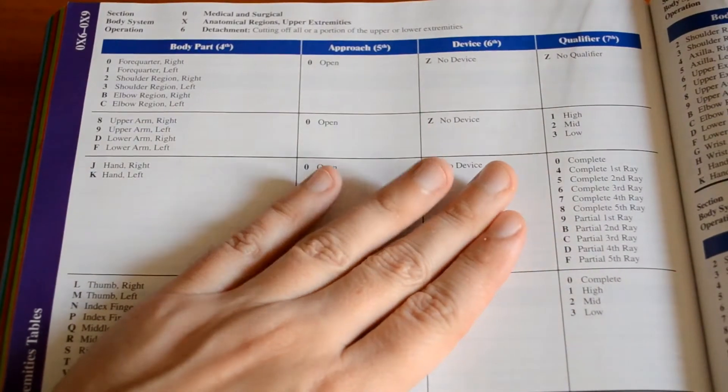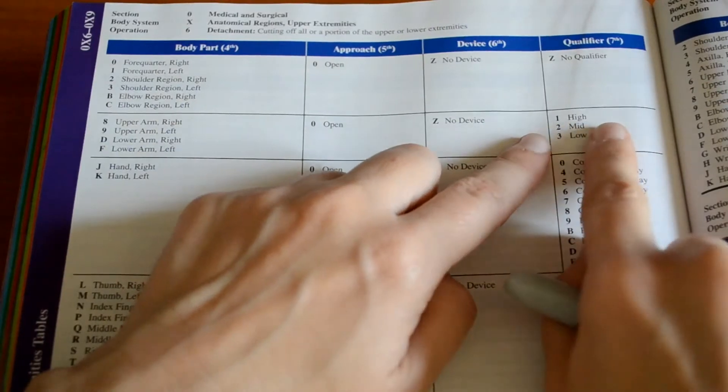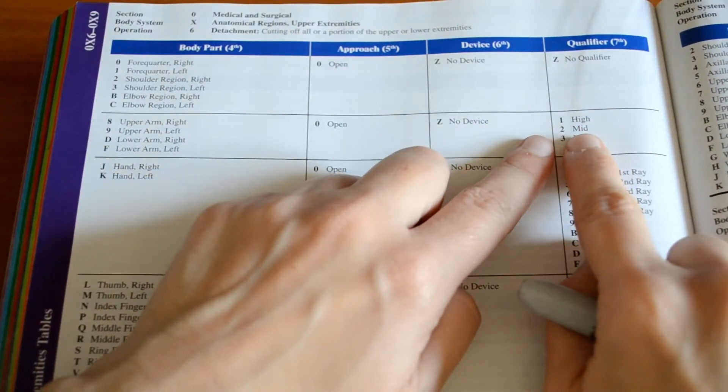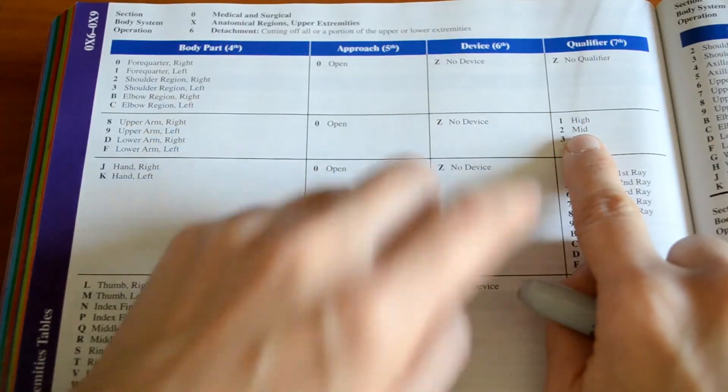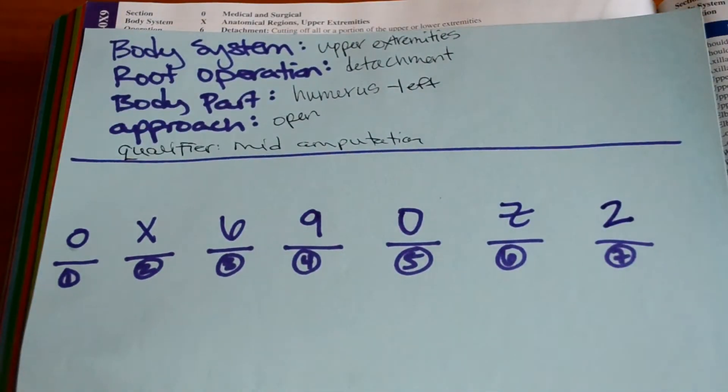And then we get to our qualifier. We stay within our row to the qualifier. The amputation took place at the mid-shaft. We already know that is a mid-amputation. So we would put a 2. And that is our code. Easy peasy.